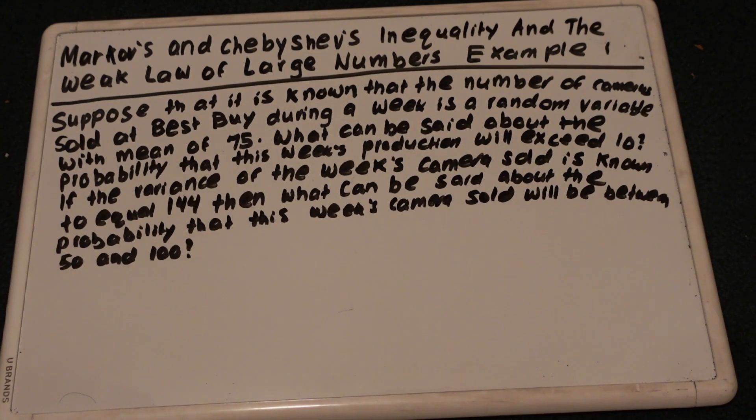If the variance of the week's cameras sold is known to equal 144, then what can be said about the probability that this week's cameras sold will be between 50 and 100? This is an example of a Markov and Chebyshev's inequality.